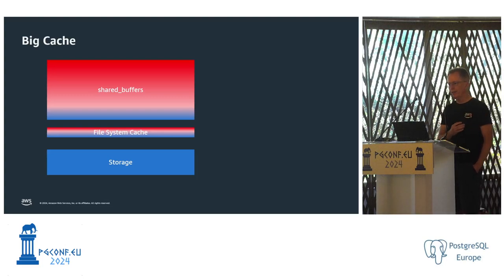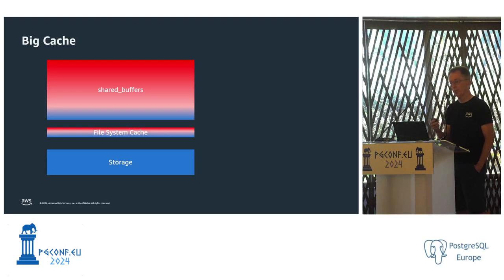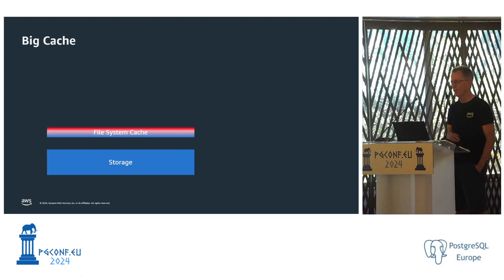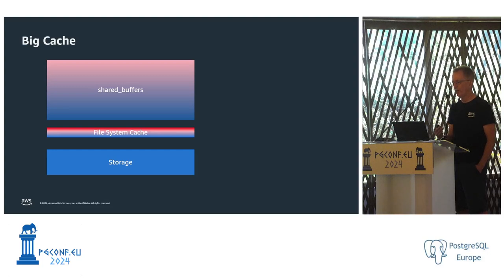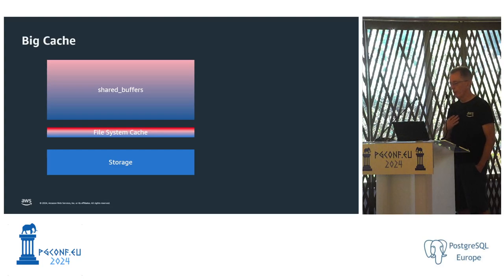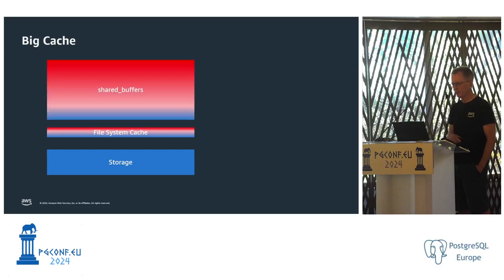Why not run with huge shared buffers and a tiny file system cache? The challenge is that if your Postgres processes crash, shared buffers go away with them. You start with a cold cache and have to load from the file system cache — which you made quite small — meaning you likely have to load from storage. You're going to have a big interruption to your service while warming the cache. For Aurora we solved this through engine changes so our cache survives Postgres crashing, but that's very complex and scary to do correctly. Without that, it'll warm back up over time but will take some time to get back to a good state.